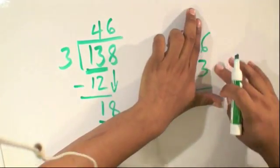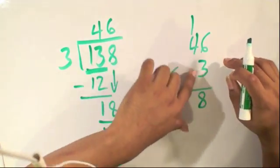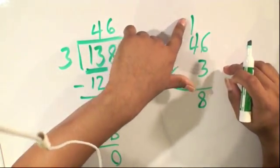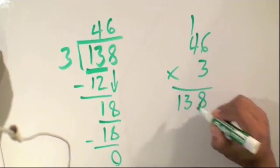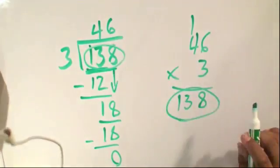6 times 3 is 18, carry the 1, 4 times 3 is 12, plus 1 is 13, and as you can see, our numbers match up.